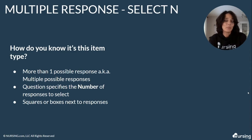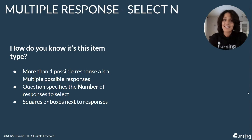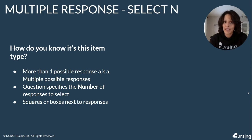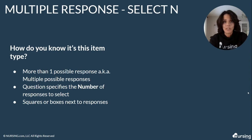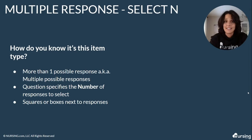You'll know that it's a multiple response select N question because there will be multiple possible responses — hence its name. It's select N because the question will specify the number of responses that it wants you to make. So it would say something like 'select four' instead of 'select all that apply.'